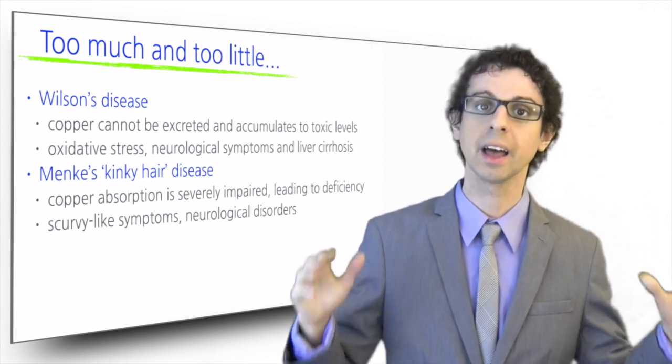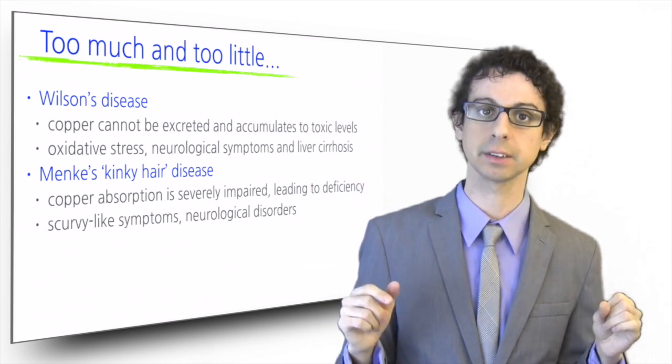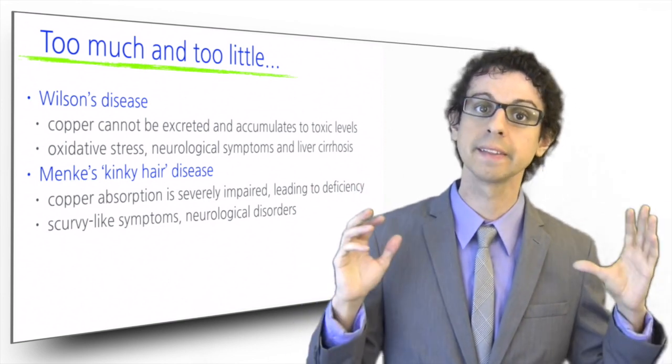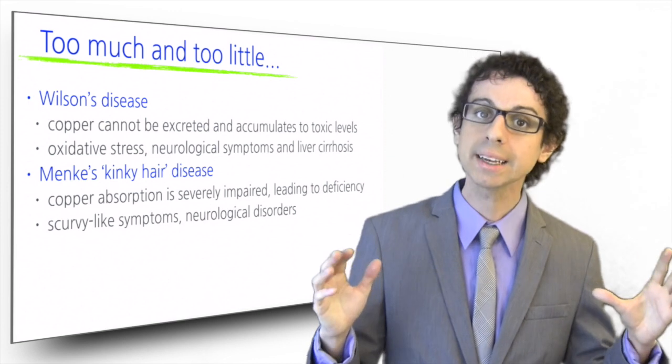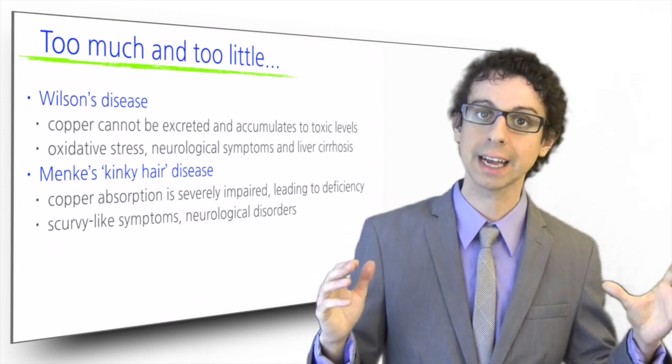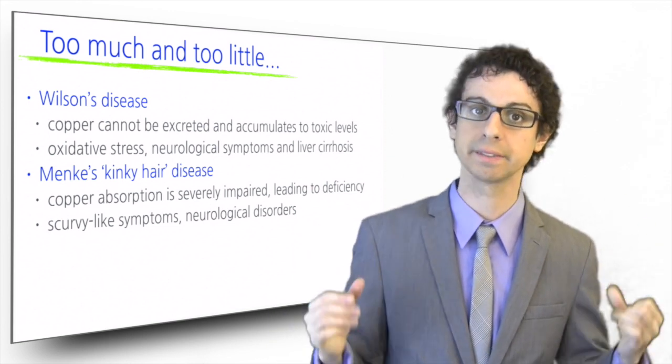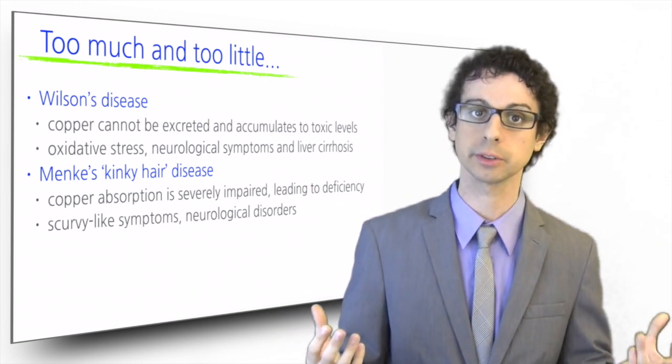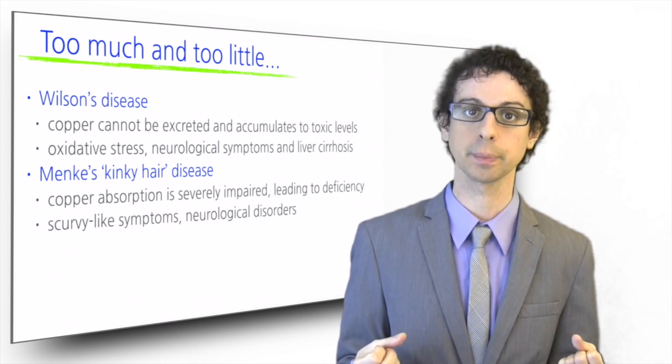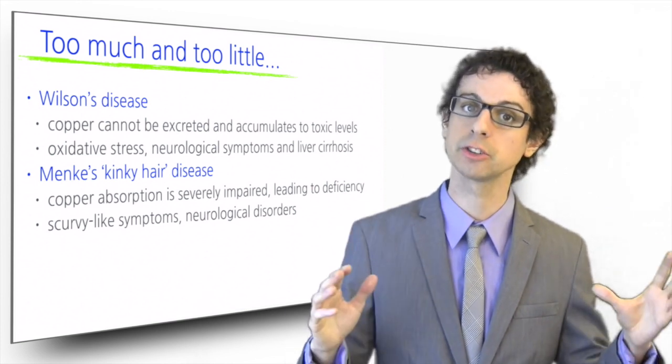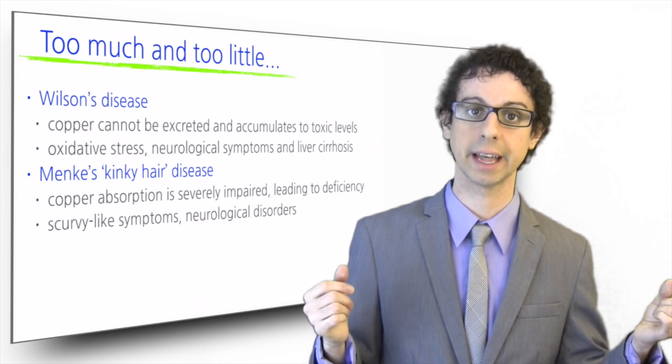Wilson's disease patients face severe oxidative stress, neurological symptoms, and liver cirrhosis. Menke's disease patients present scurvy-like symptoms with opening wounds, bleeding gums, and weak blood vessels prone to aortic ruptures or ventricular hypertrophy. They also face neurological disorders, and if untreated, an early death.